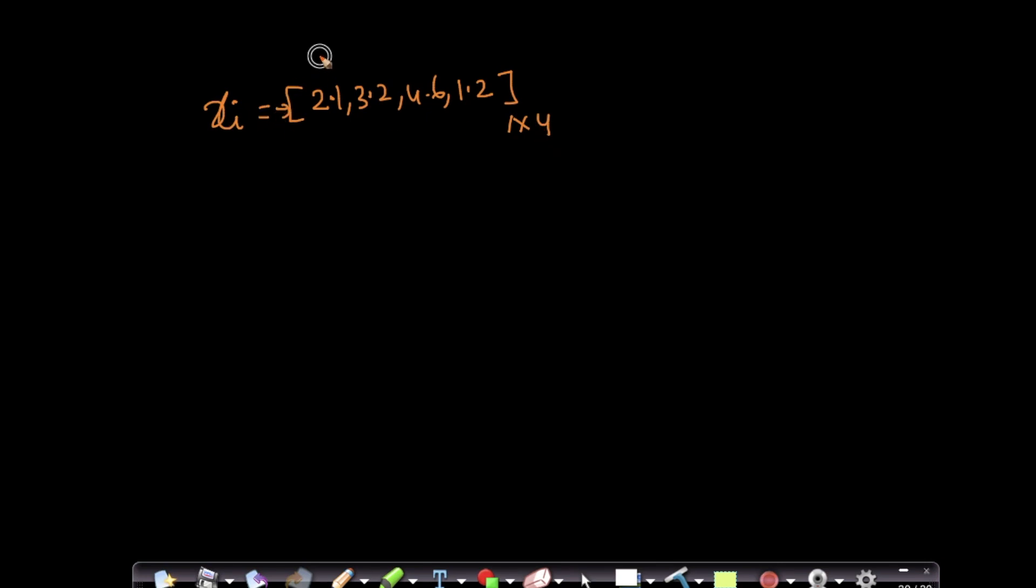There is only one row, the first column, second column, third column, fourth column. So this is called a row vector.